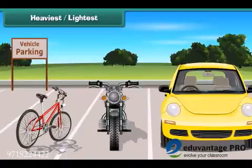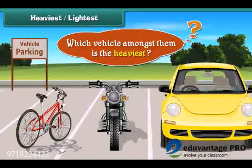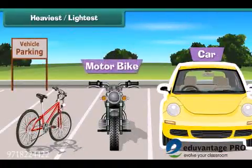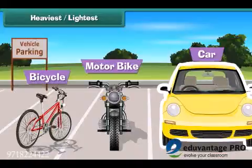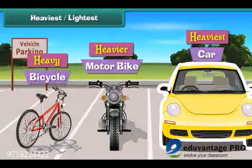Look at these vehicles parked in the parking bay. Which vehicle amongst them is the heaviest? Car is the heaviest vehicle. Motorbike is less heavy than the car, and the bicycle is the least heavy amongst all of them. Heavy, heavier, and heaviest are used to describe weights. We can also use light, lighter, and lightest to describe weights.